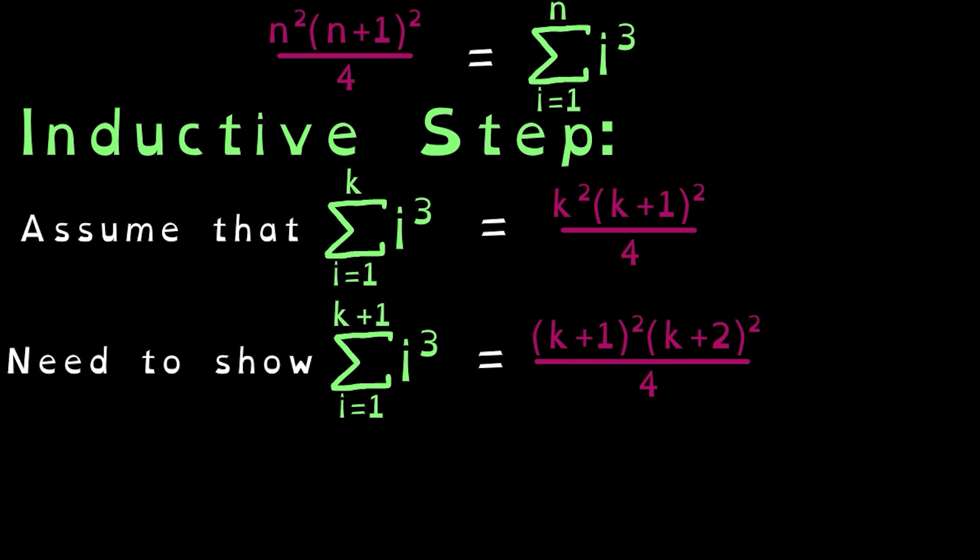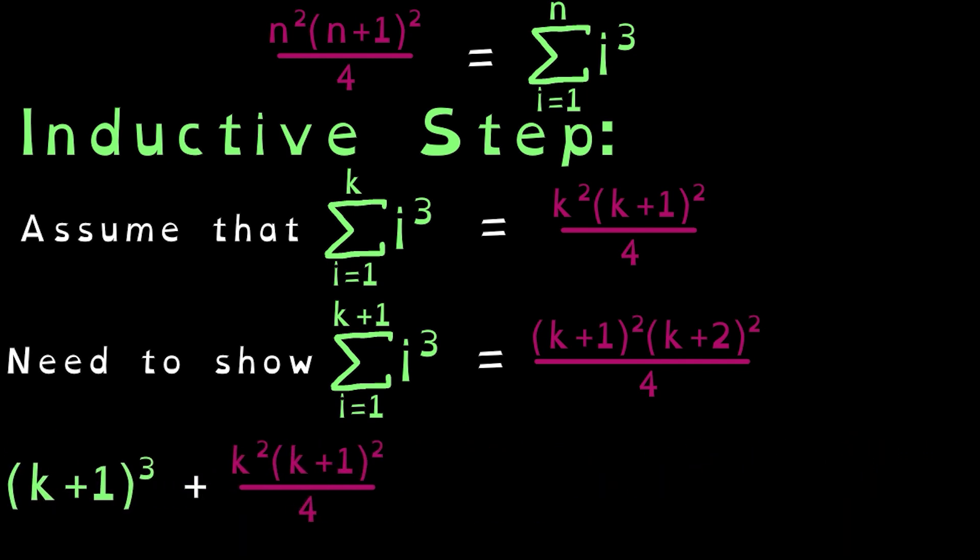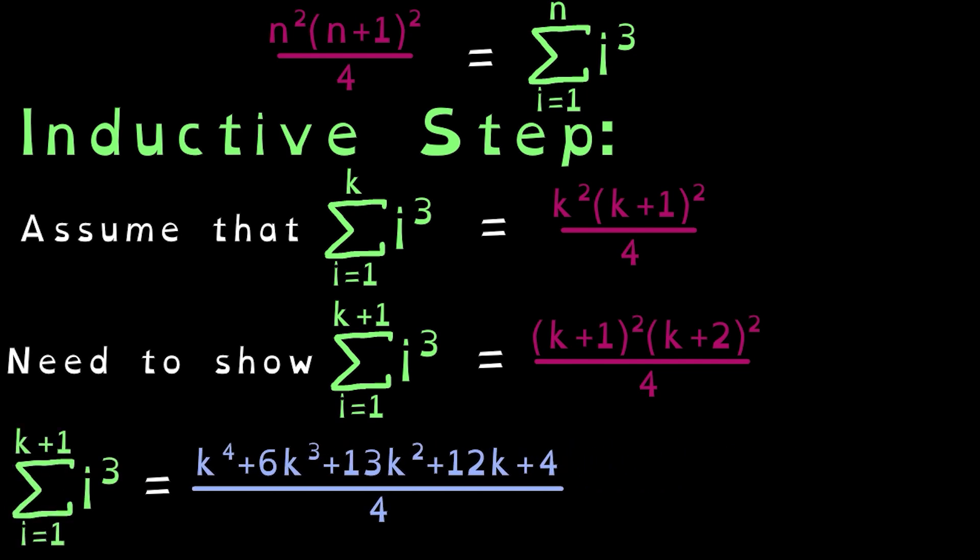We can rewrite the left-hand side as k plus 1 cubed plus the summation up to k. Since we are assuming that the summation up to k is true, we can replace it with k squared times k plus 1 squared over 4. We can then multiply k plus 1 cubed by 4 over 4 to get the same denominator for both terms, then expand outward. We can then combine like terms. I'll now do what every good math textbook does and leave the factoring of this to the audience, but you can easily show that the factorization of this polynomial is k plus 1 squared times k plus 2 squared all over 4.